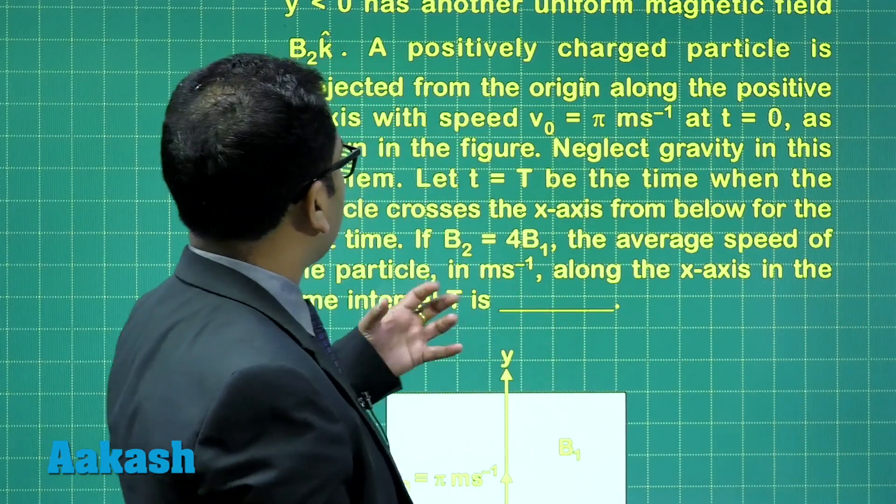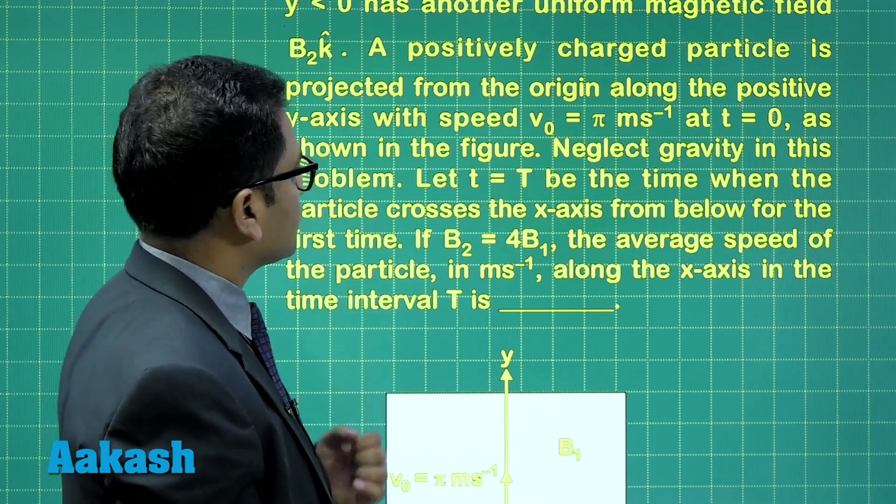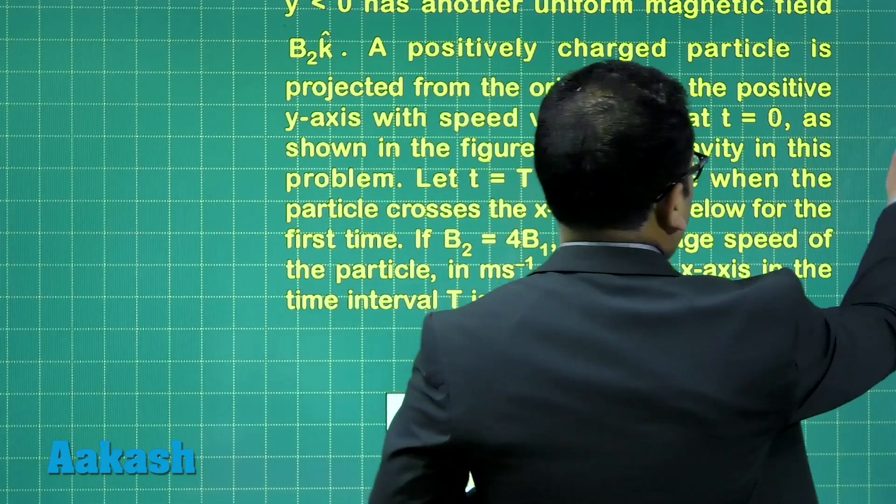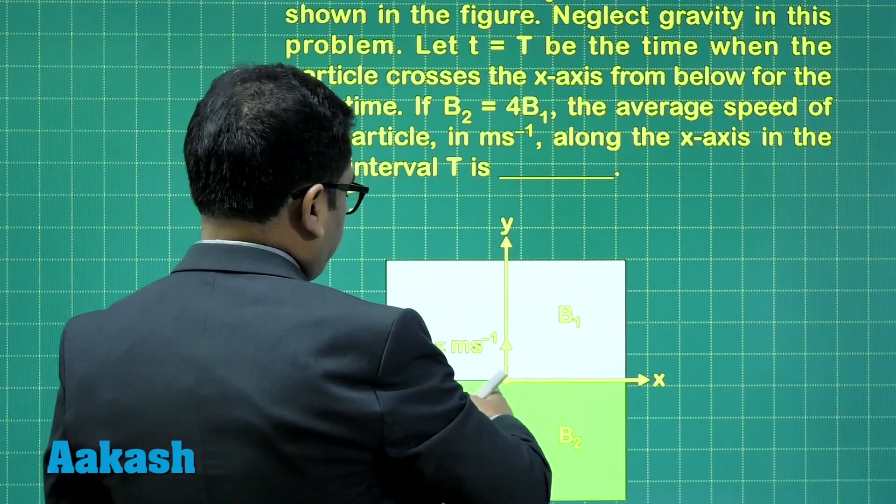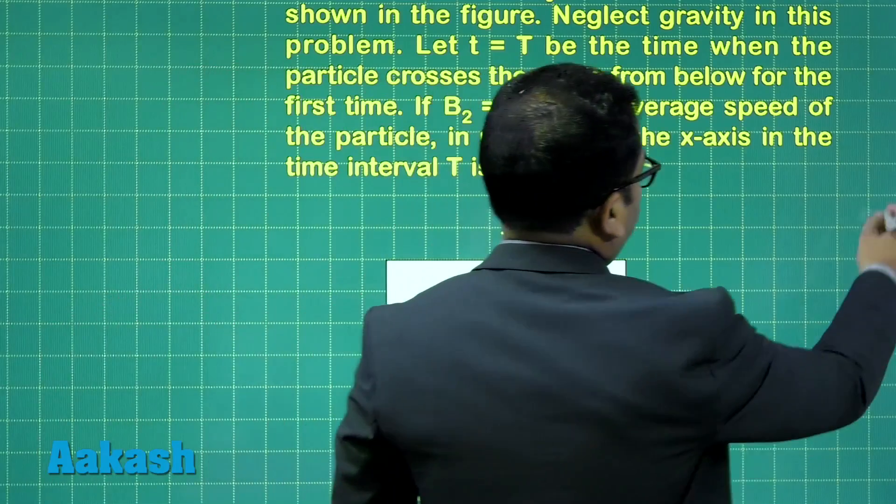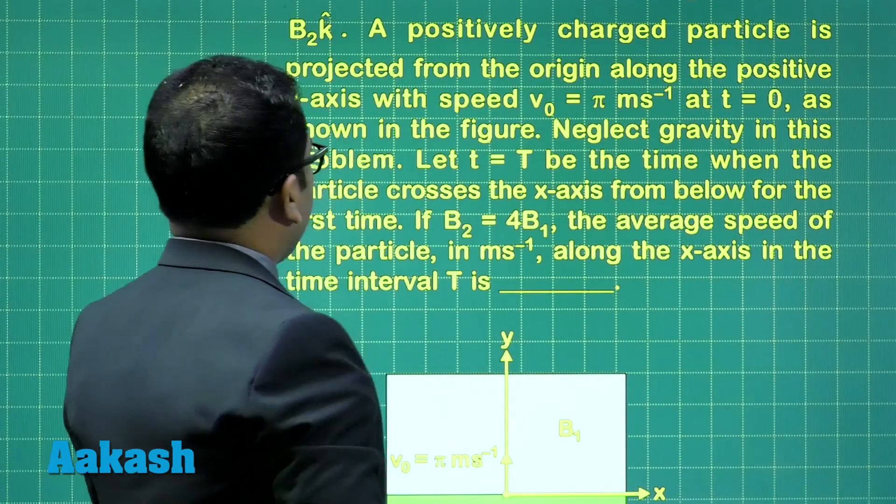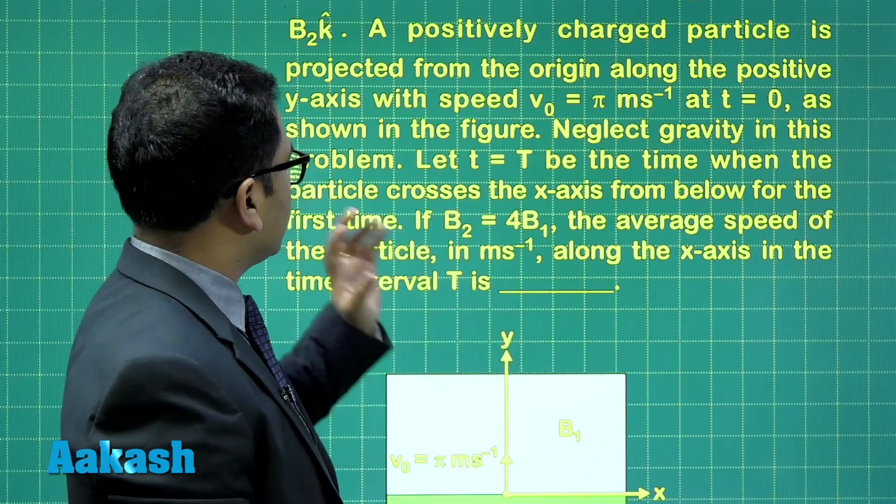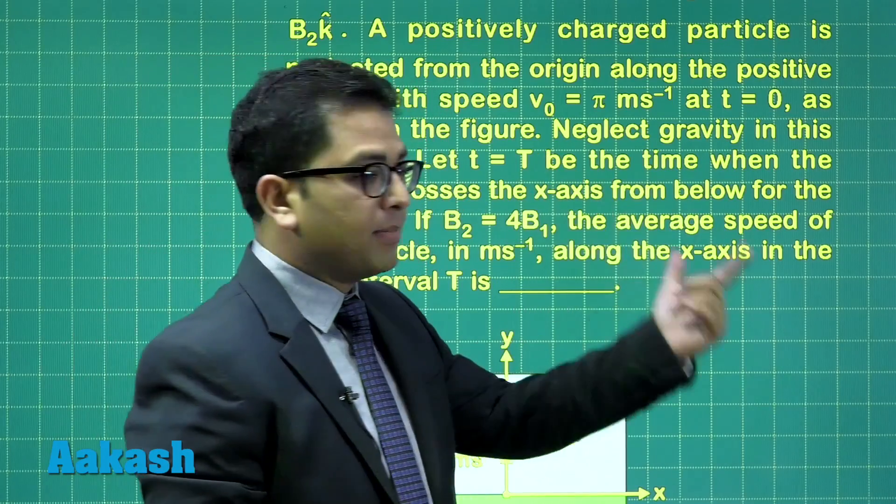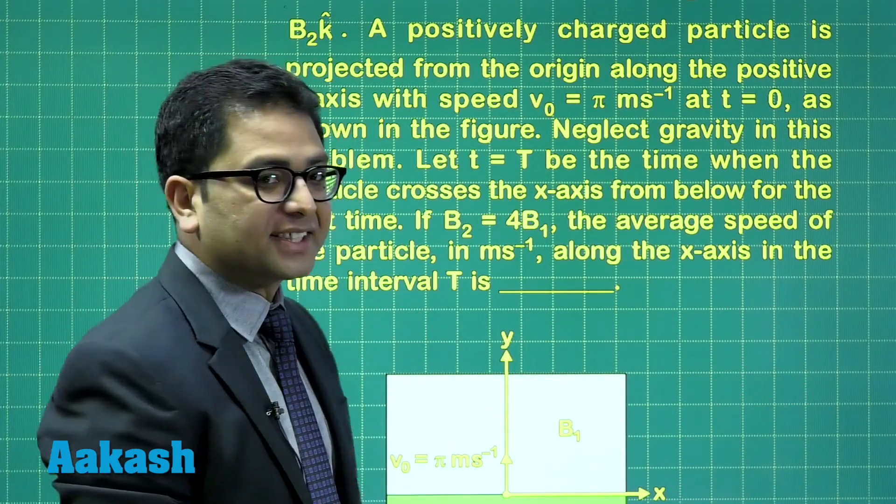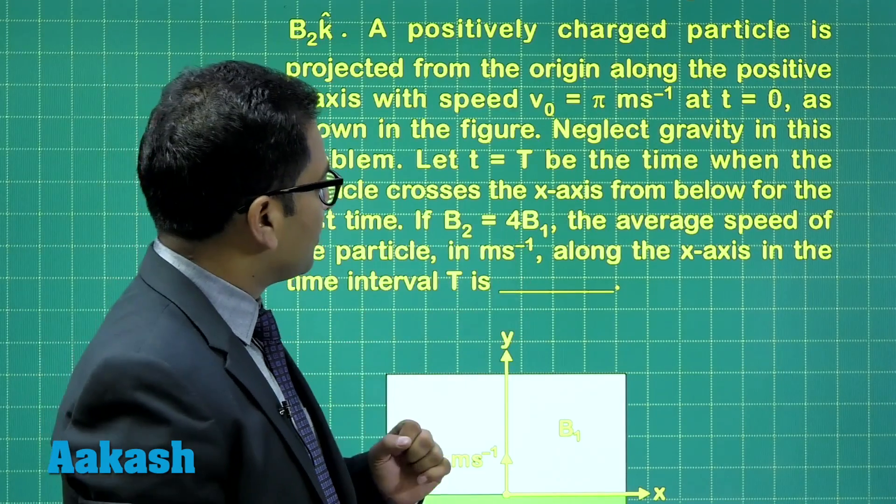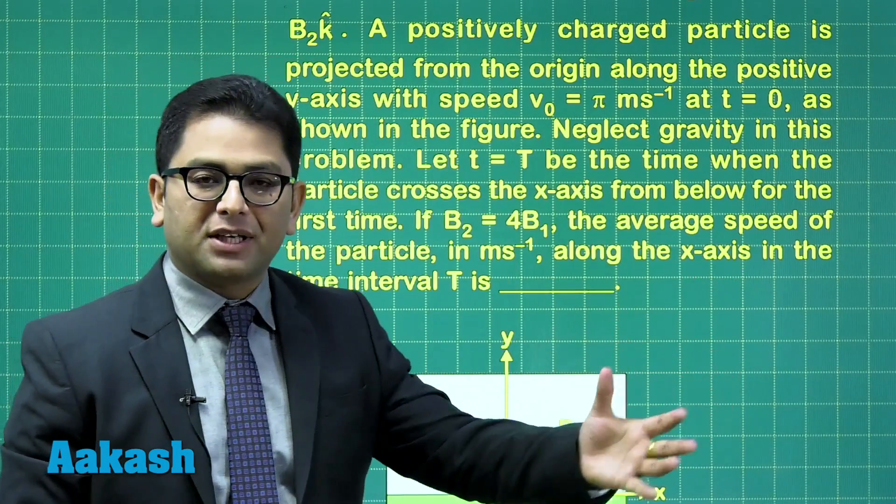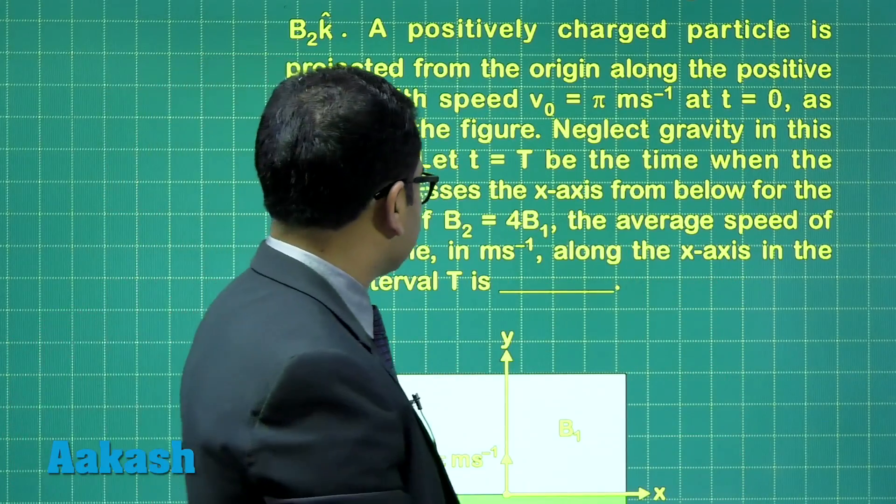A positively charged particle is projected from the origin along the positive y-axis with a speed pi meter per second. So, here is the positively charged particle, which is projected up with a speed pi meter per second. Neglect gravity and at T equals to capital T be the time when the particle crosses the x-axis from below for the first time. If B2 equals to 4B1, the average speed of the particle along the x-axis, not the entire average speed, but average speed along the x-axis, that has been asked.